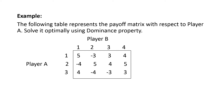Here is an example. The following table represents a payoff matrix with respect to player A. Solve it optimally using the dominance property. Player A has strategies 1, 2, and 3, and for player B, the strategies are 1, 2, 3, and 4.